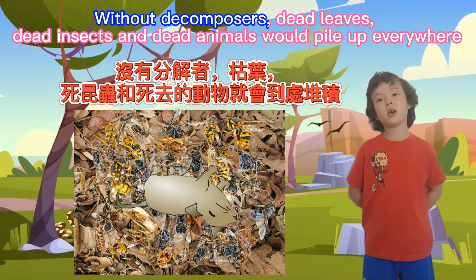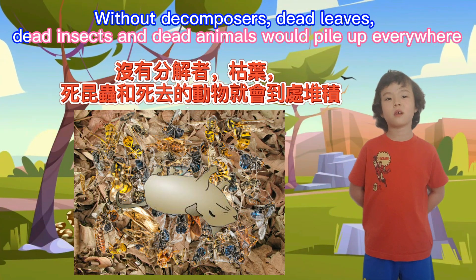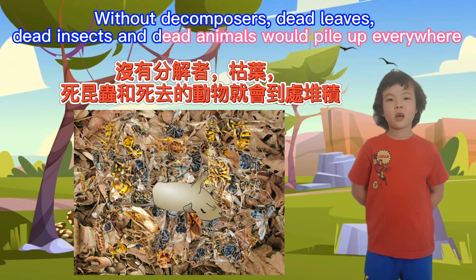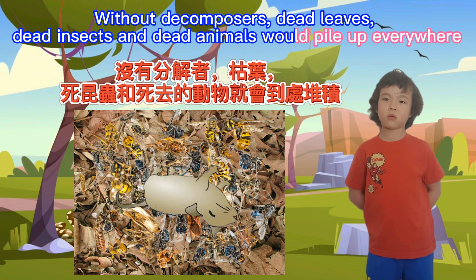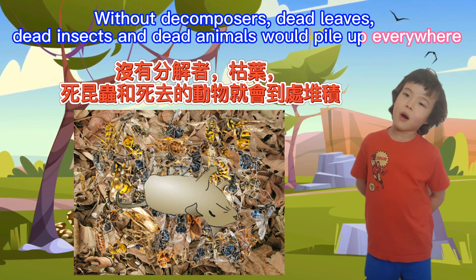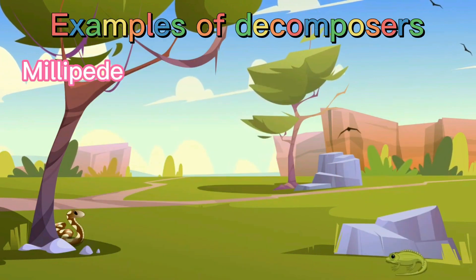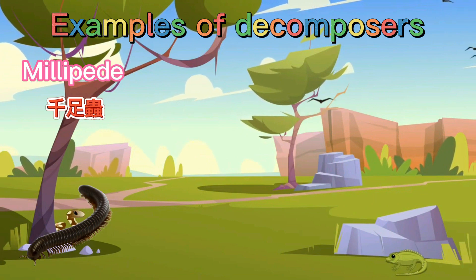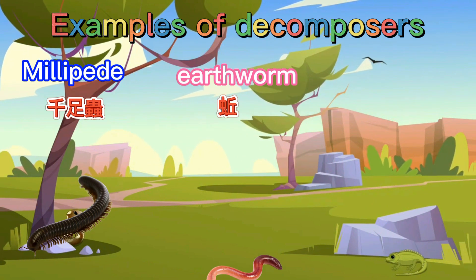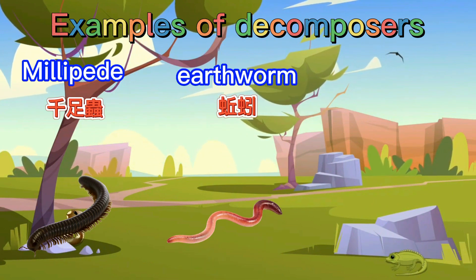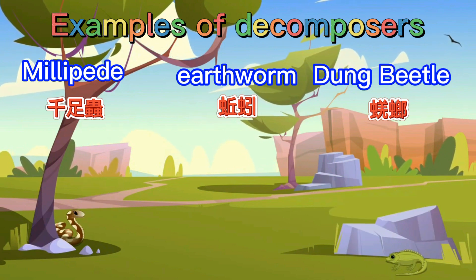Without decomposers, dead insects and dead animals would pile up everywhere. Examples of decomposers include millipede, earthworm, and dung beetle.